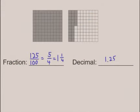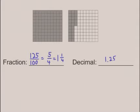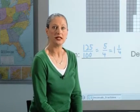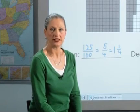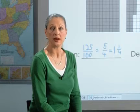Students can also use decimal grids to investigate a wide variety of fraction and decimal relationships, such as using greatest common factors to write fractions in simplest form and incorporating mixed numbers. In addition, these shaded grids can be used to make comparisons, determine equivalents, and order numbers.